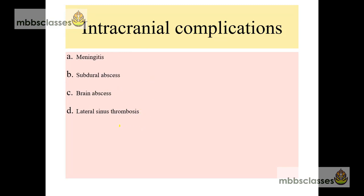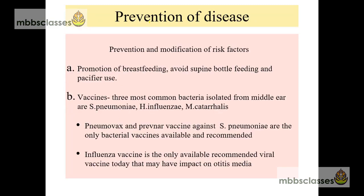These complications will be discussed in another video. Nowadays attention is paid to prevention of the disease, which depends on modification of the risk factors — host, environmental, anatomic, and infection-related. Among modifiable factors, promotion of breastfeeding is important. Exclusive breastfeeding for six months is advised because breastfeeding provides immunity to the infant and prevents colonization of bacteria in the nasopharynx. Another method of prevention is avoiding supine bottle feeding and excessive use of pacifier.